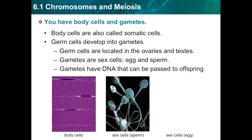Germ cells are the cells in your reproductive organs, the ovaries or the testes, that develop into eggs or sperm. Somatic cells, or body cells, are all the other cells in your body. Somatic cells make up most of your tissues and organs. The DNA in your somatic cells will not be passed on to your children — only the DNA in the egg or sperm cells gets passed on to the offspring. Egg cells and sperm cells are called gametes.